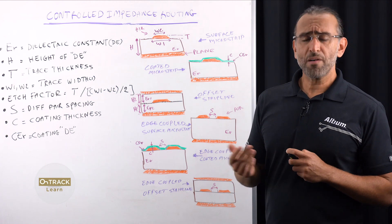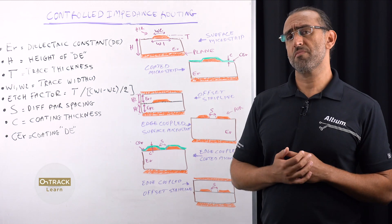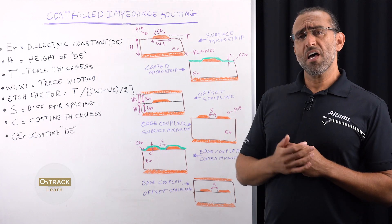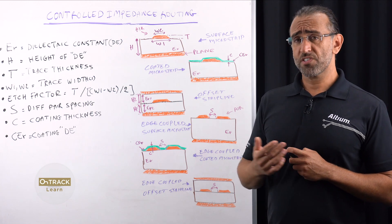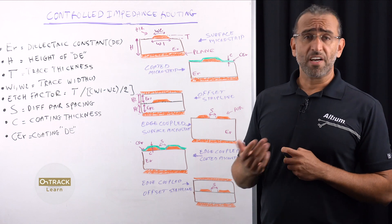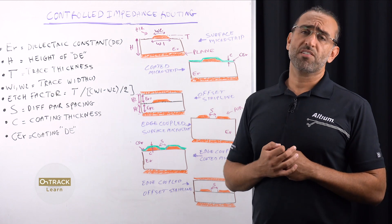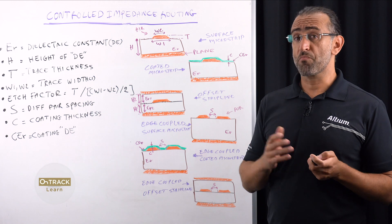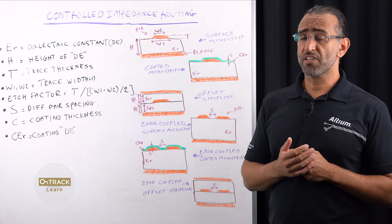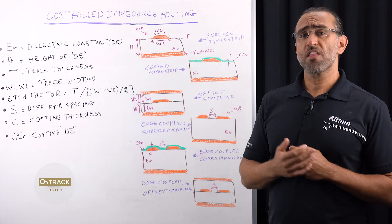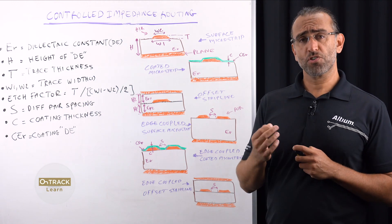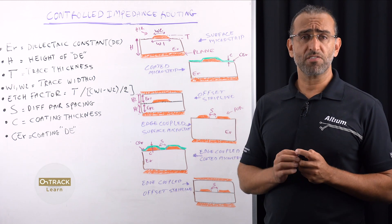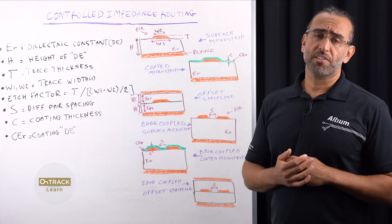So what comes into play to determine your PCB impedance? Well, typically, a PCB impedance is determined by its resistance, conductance, inductive, and capacitive reactance. And these factors are a function of the board structure, the properties of the conductive and dielectric materials, the structure and dimensions of the conductors, and their separation from the signal return planes, as well as the signal properties.